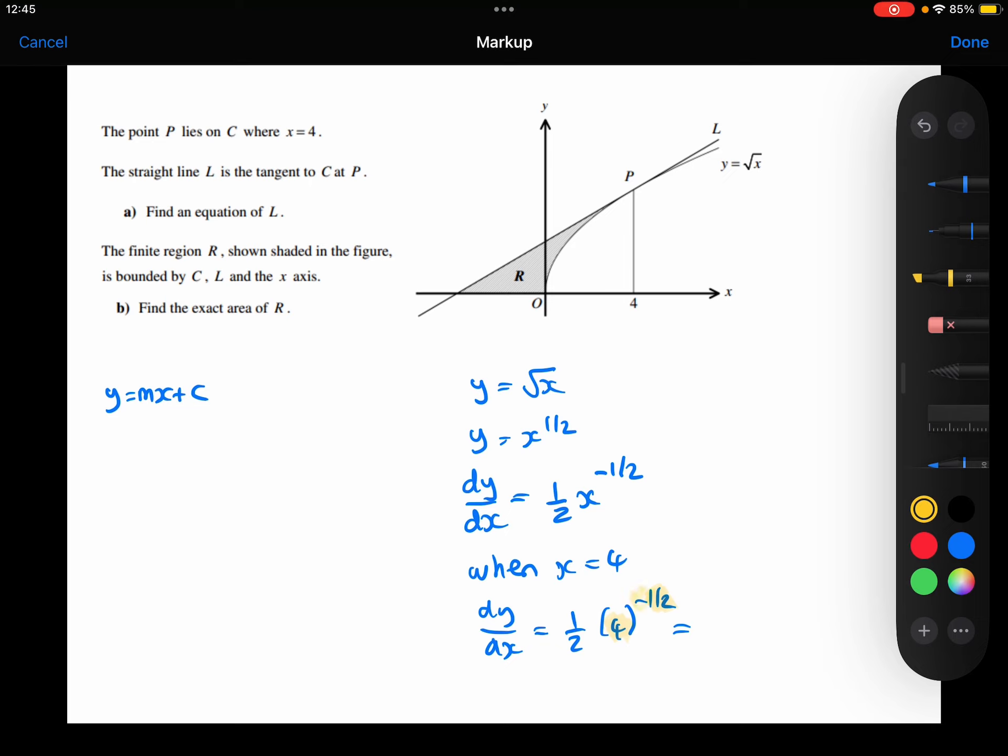And then the minus means that it's going to be 1 over 2. Times by the one half, so a half times a half is a quarter. So that's the gradient of the curve at that point, and therefore also the gradient of the tangent at that point.